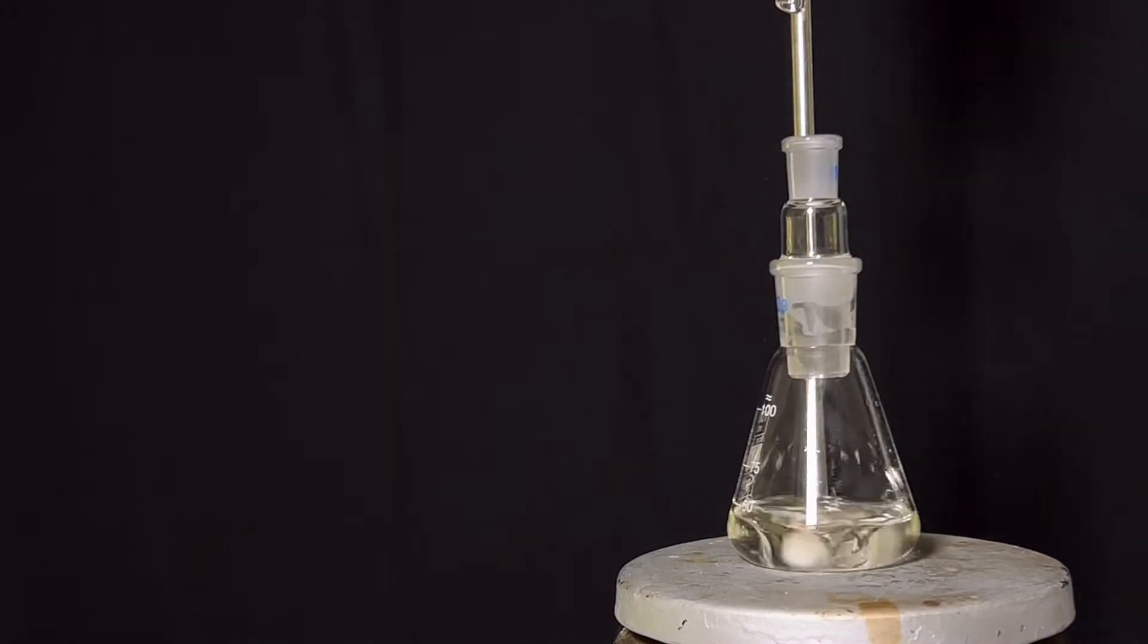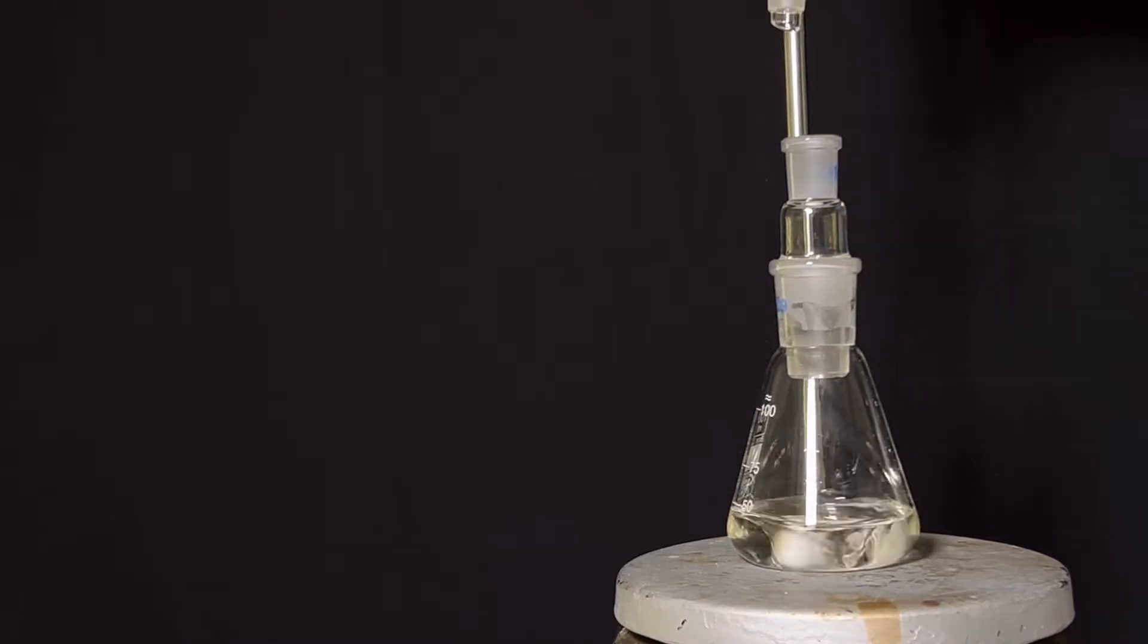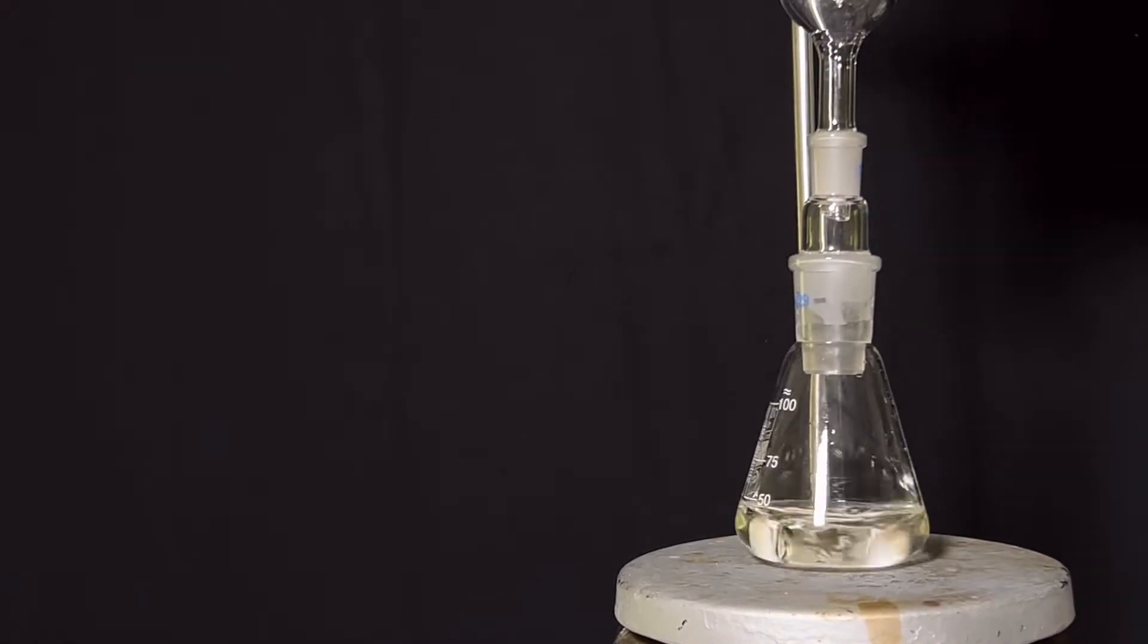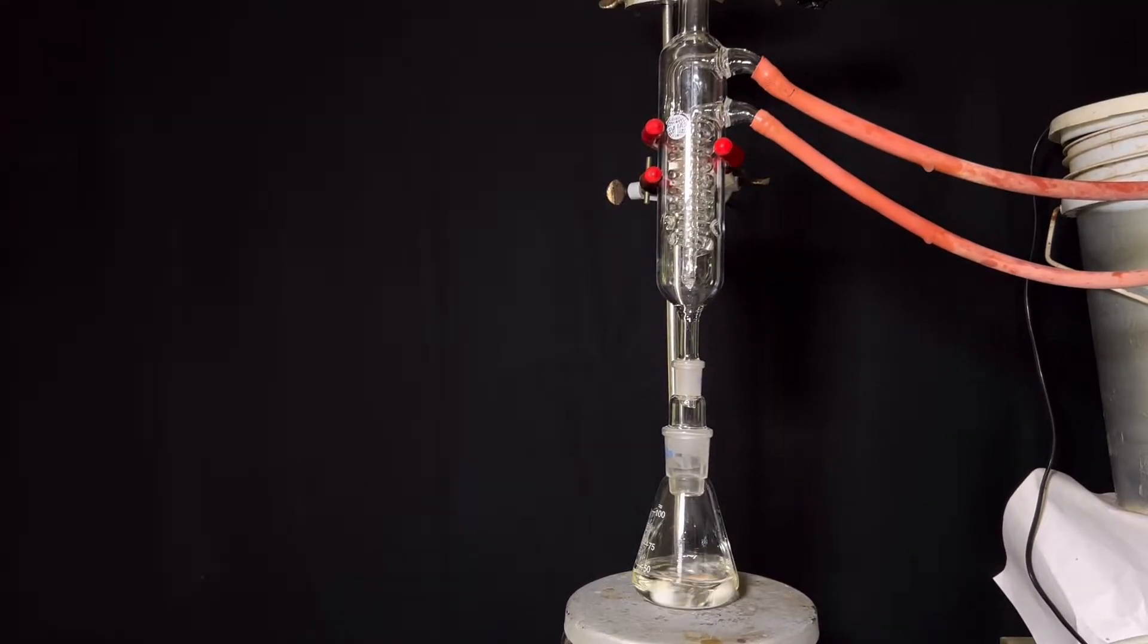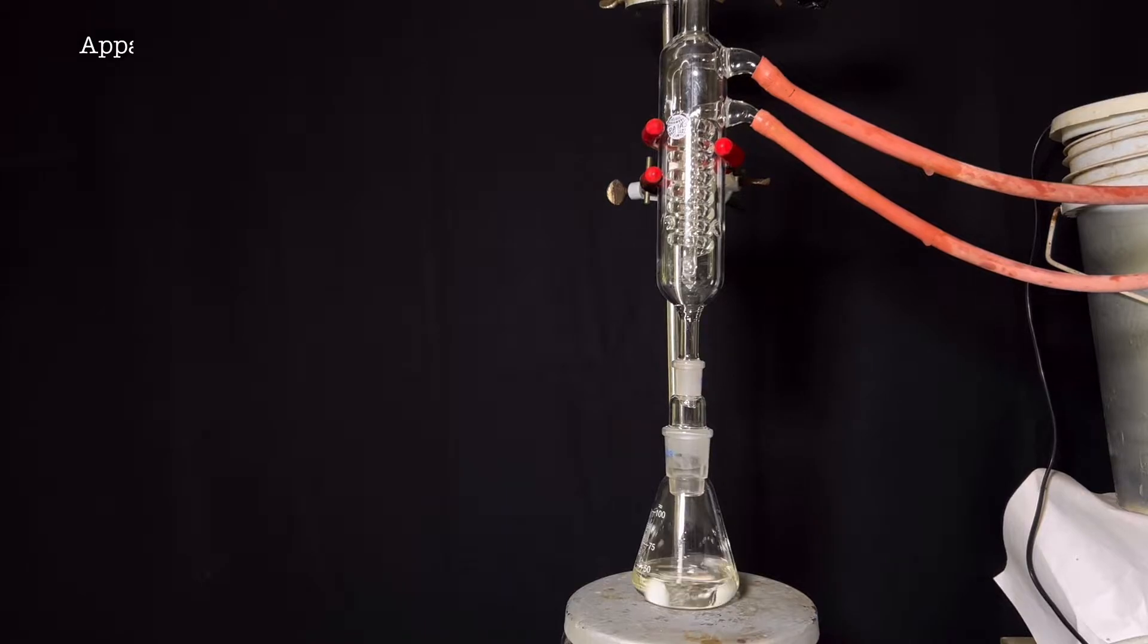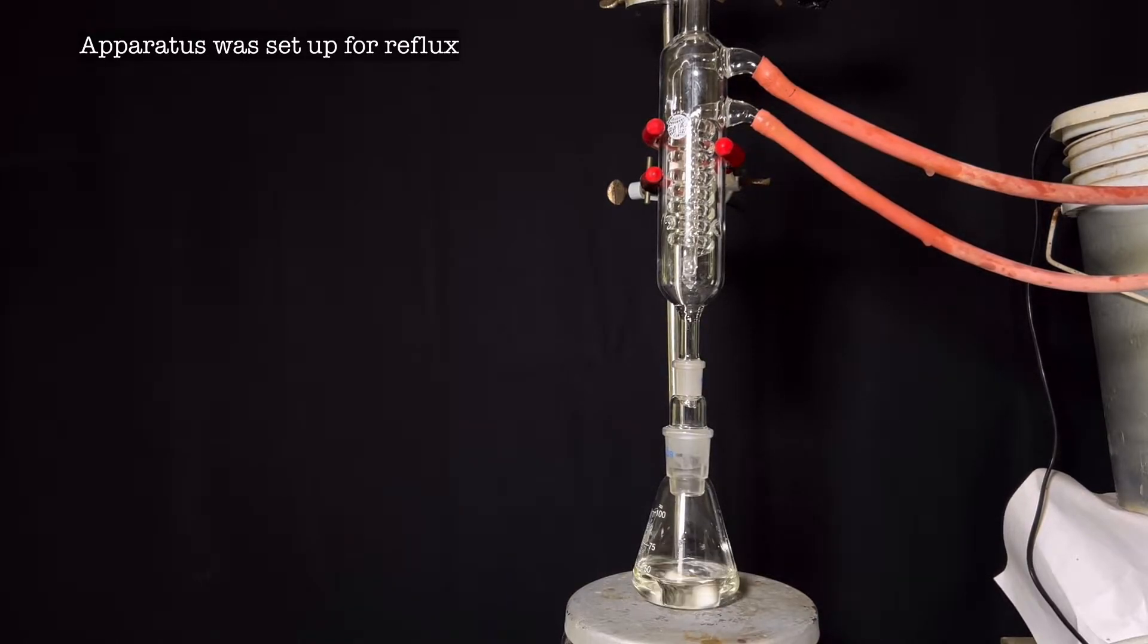Funnel was removed and the Erlenmeyer flask was equipped with a reduction adapter and a small Dimroth condenser was connected on top of the flask. Cold water was circulated through the flask. The hotplate was heated to reflux the contents.